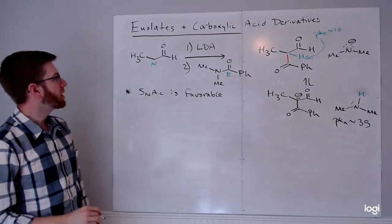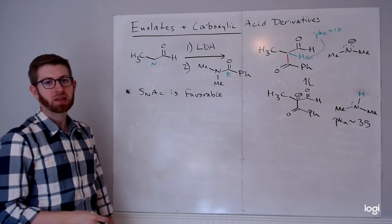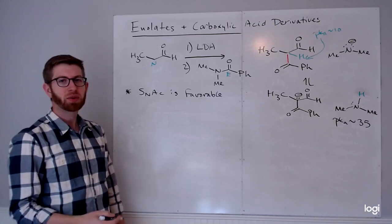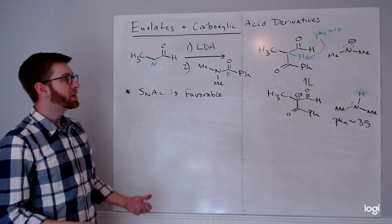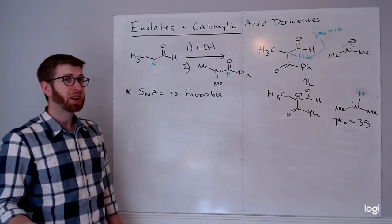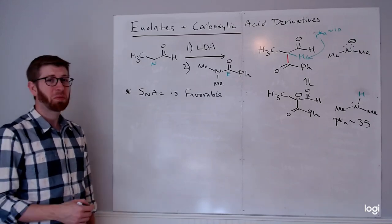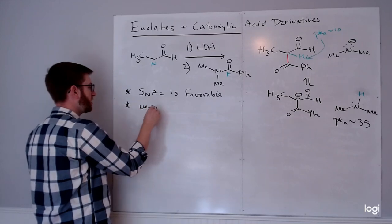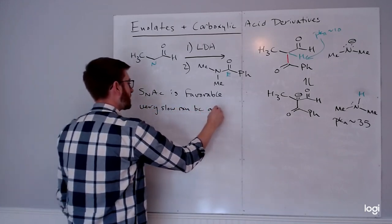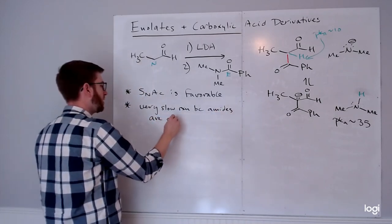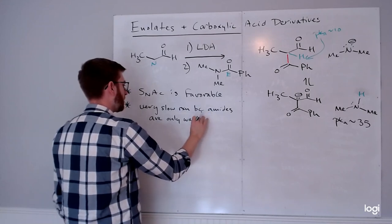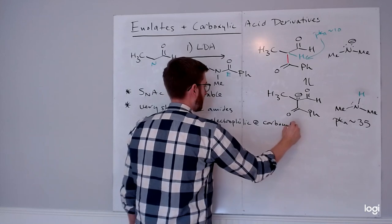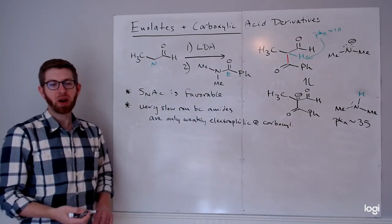However, there's a different issue: amides are really not good electrophiles. We learned in previous SLOs that amides have hydrolysis half-lives of thousands of years. Enolates are not sufficiently nucleophilic to react with amides - amides didn't even react with Grignards or organolithium reagents, which are much better nucleophiles. So in this particular case we have a rate problem: a very slow reaction because amides are only weakly electrophilic at the carbonyl. In principle the SNAC can happen, but you might be waiting a while.